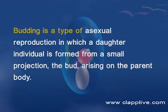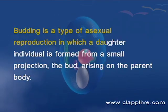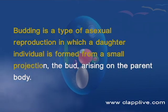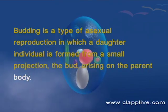Budding is a type of asexual reproduction in which a daughter individual is formed from a small projection, the bud, arising on the parent body.